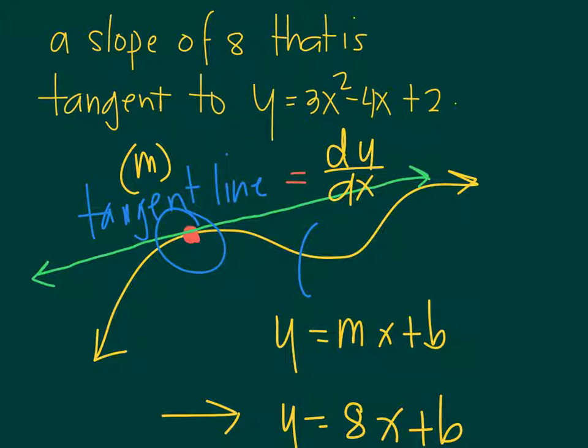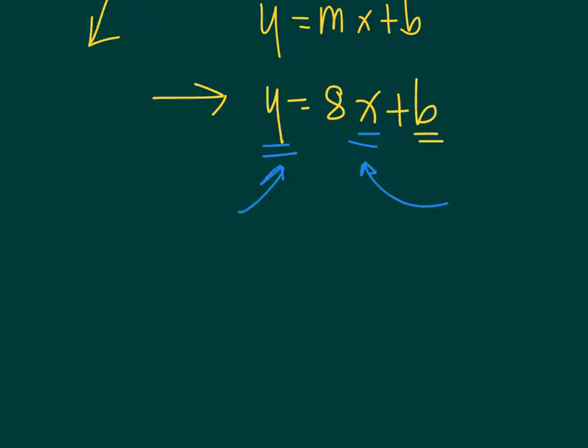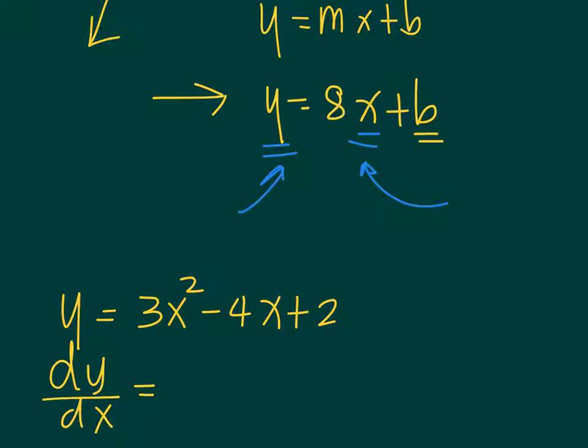So we have y equals 3x squared minus 4x plus 2. dy over dx is equal to, review the derivative, 6x minus 4. This is the slope of the tangent line. And in this specific problem, the slope of the tangent line is equal to 8. Were you able to connect the information? The slope of the tangent line is the derivative at that point. When we take the derivative, it says 6x minus 4. So in this specific problem, the 6x minus 4 is equal to 8.